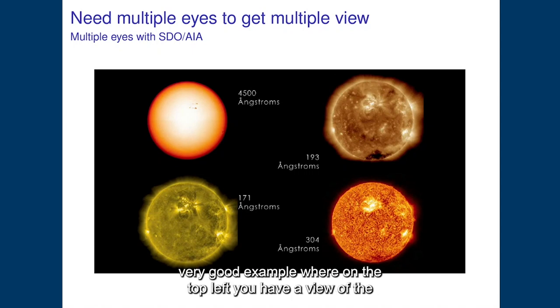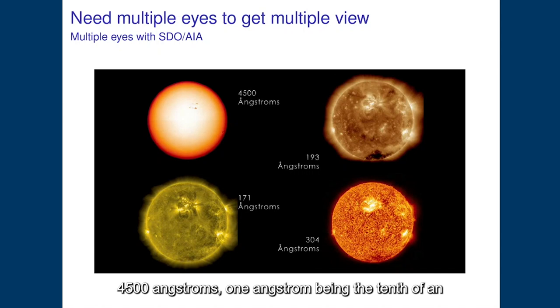Here you see a very good example where on the top left you have a view of the solar surface, the photosphere, in the visible part of the spectrum at 450 nanometers or 4500 angstroms, one angstrom being the tenth of a nanometer. The view on the top right and bottom left are two different views of the solar corona corresponding to different temperatures of the plasma in the solar corona above one million degrees.